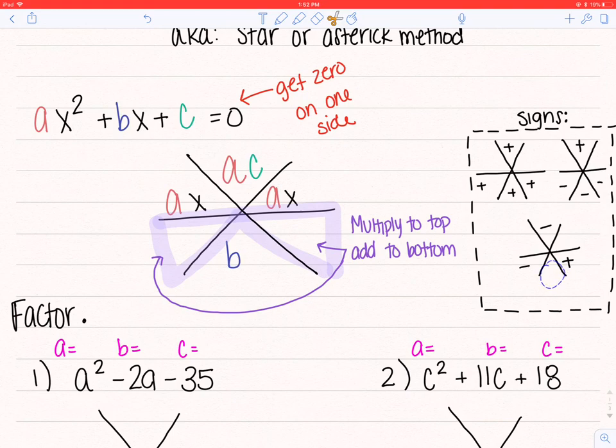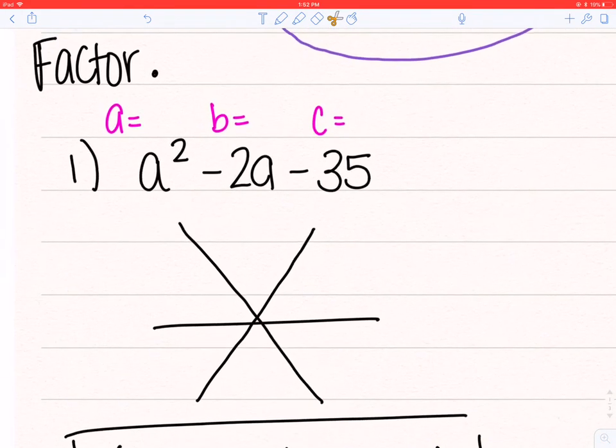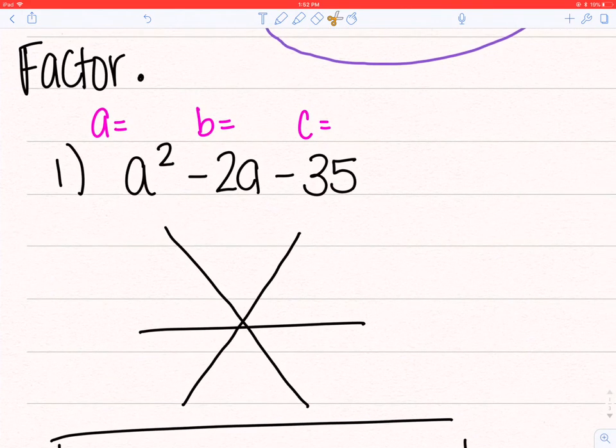Make sure before you write your factors, you check that the two numbers that you wrote in to the wings multiply to the top and add to the bottom. Alright, so your directions for these will always say factors. So here's my first example, a squared minus 2a minus 35. So you're going to write out a, b, and c.